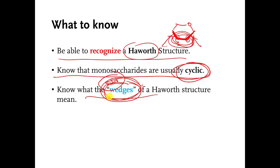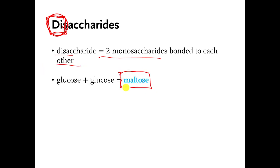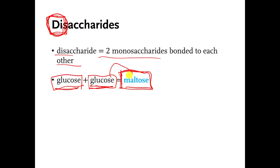Now we're going to move on to disaccharides. We said in an earlier video that disaccharides are made by connecting two monosaccharides together — that's what the 'di' means; di means two. There are many different kinds of disaccharide molecules. Maltose is a disaccharide — the way that you make maltose is you take two glucose molecules, glucose being a monosaccharide, and you connect them together. If you connect them in a different way, you might make a different disaccharide.